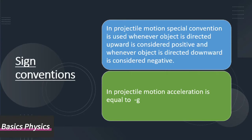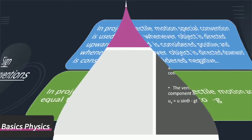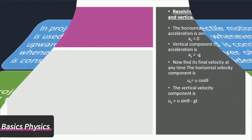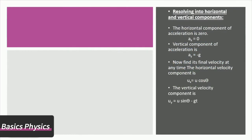In projectile motion, acceleration is equal to g. Resolving the velocity into its horizontal and vertical components, the horizontal component of acceleration is zero because there is no force acting horizontally.